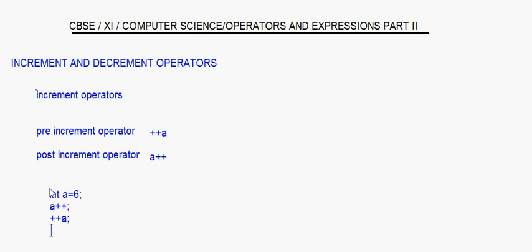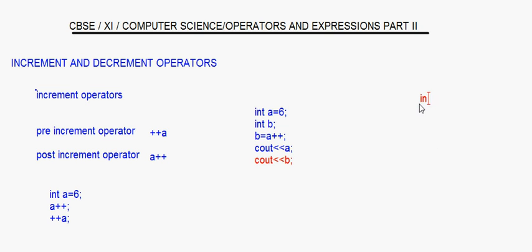Suppose I have int a equal to 6, and then I take an integer b and write b = a++, then cout a and cout b. That is one coding. In another coding, the same thing but the post-increment becomes a pre-increment: b = ++a, then cout a and cout b.